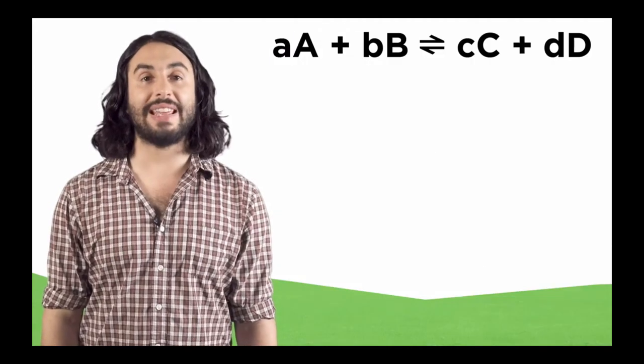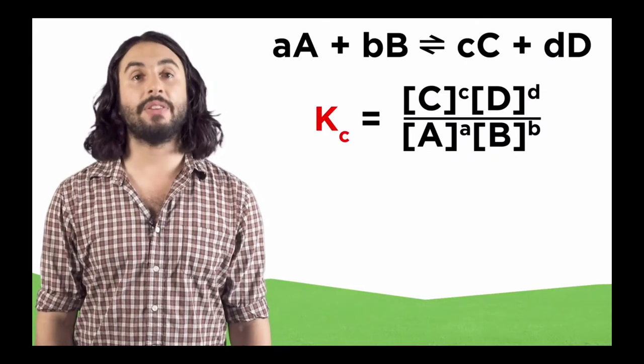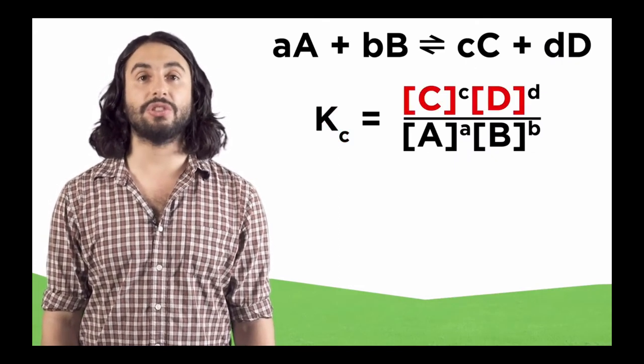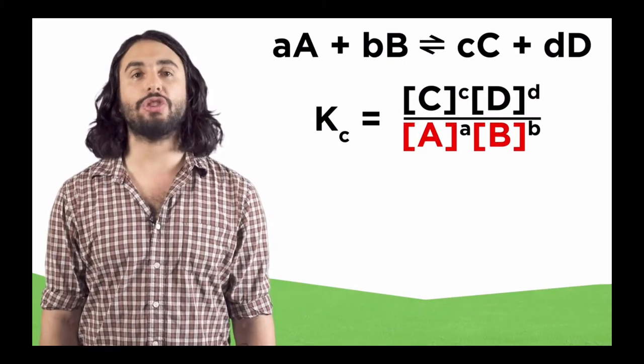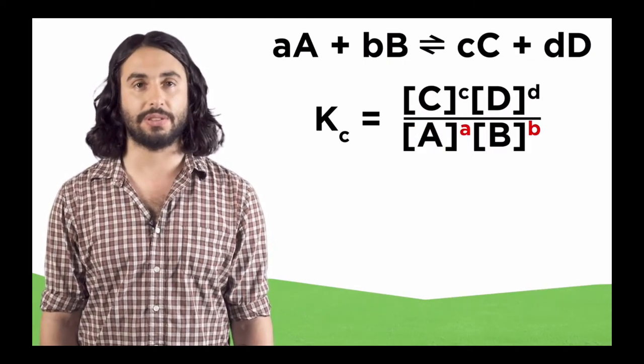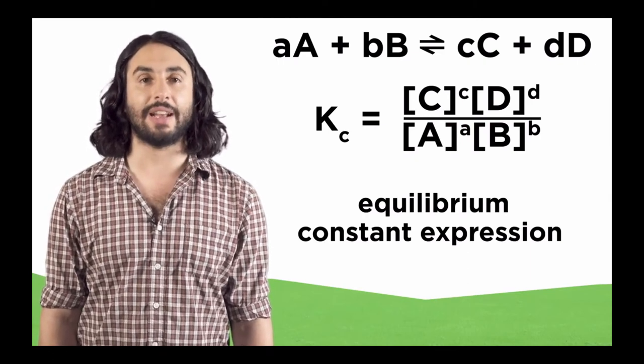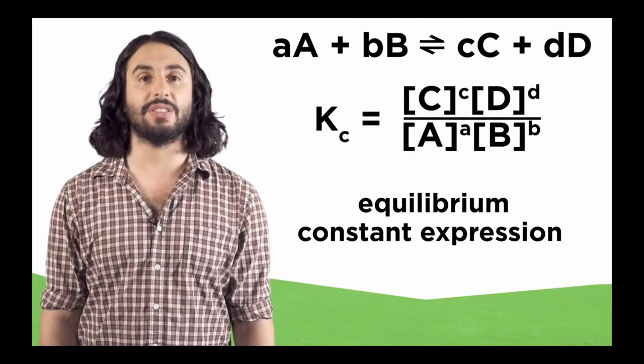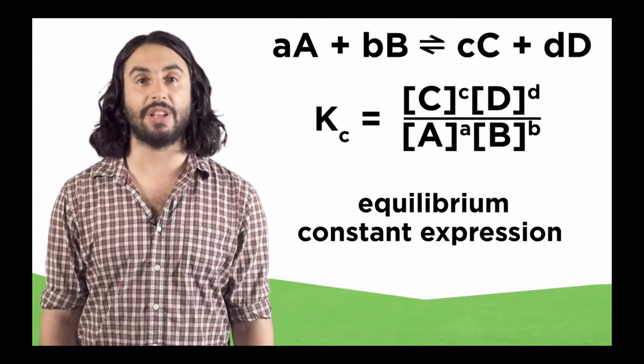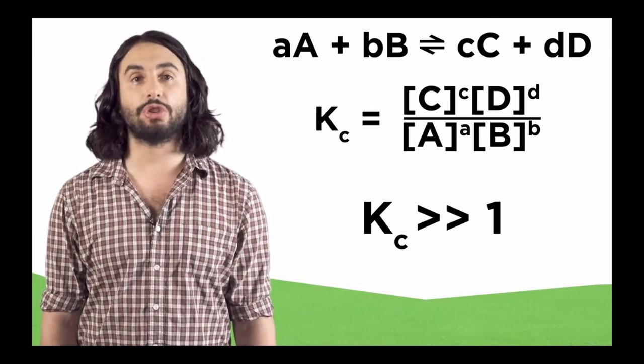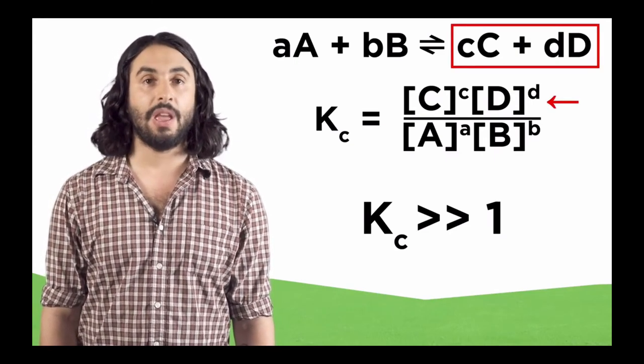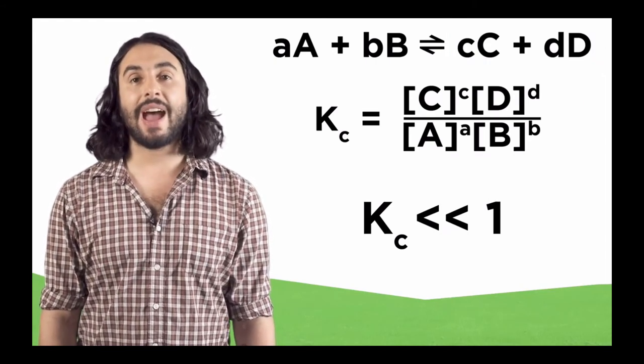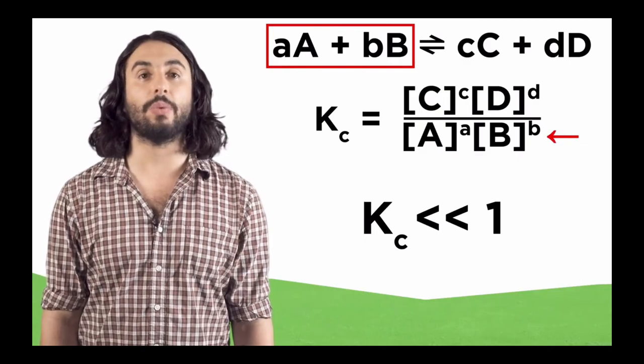But first, let's learn about equilibrium expressions. Every equilibrium has an equilibrium constant Kc. It will be given by the concentrations of the products, each raised to the power of their stoichiometric coefficients, over the concentration of the reactants, each raised to the power of their stoichiometric coefficients. This is called the equilibrium constant expression. One thing this constant tells us is whether the products or reactants are favored in the equilibrium. If Kc is much greater than one, that means the numerator is bigger, so we are creating more products. If Kc is much less than one, that means the denominator is bigger and we are creating more reactants.